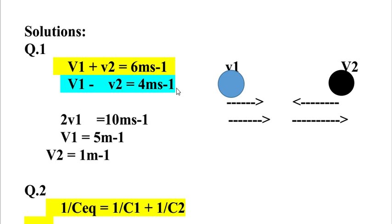We add these equations. V1 plus V2 plus V1 minus V2. The V2 terms cancel. 2V1 equals 10 meters per second, so V1 is 5 meters per second. To find V2, we substitute back and get V2 equals 1 meter per second.